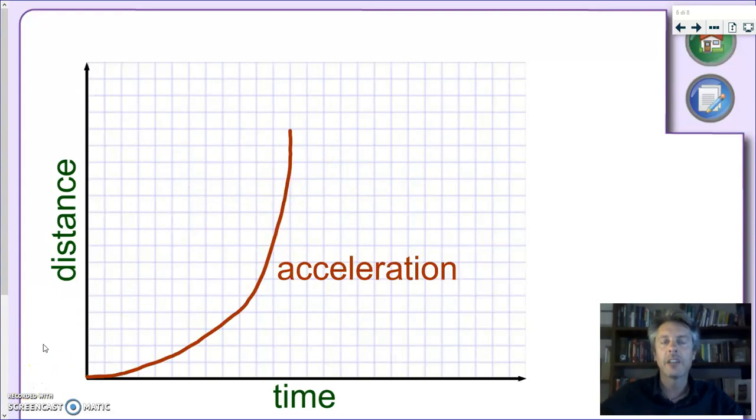Finally, how does the distance-time graph for a movement that doesn't have a constant speed look like? Remember, if the speed is not constant, we're saying that we have an acceleration.